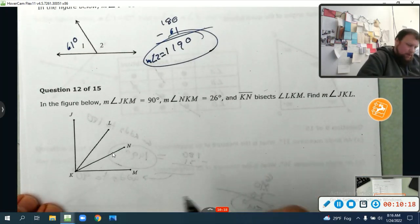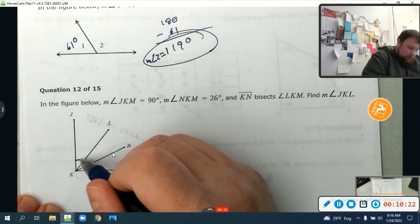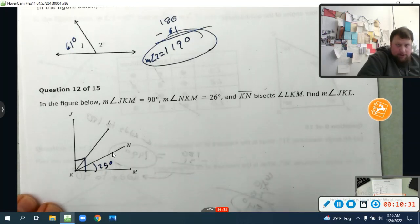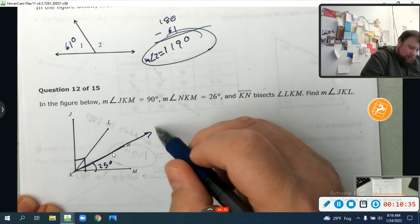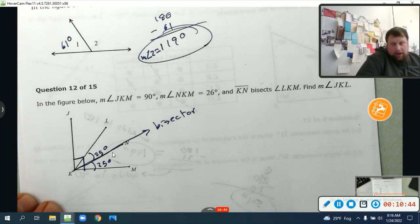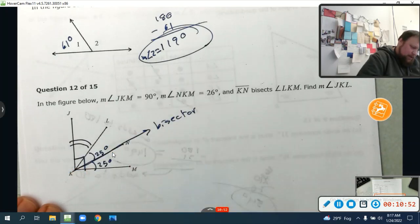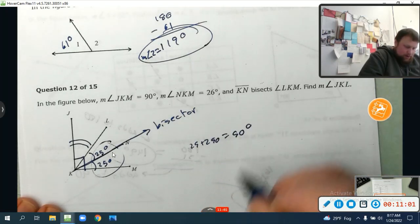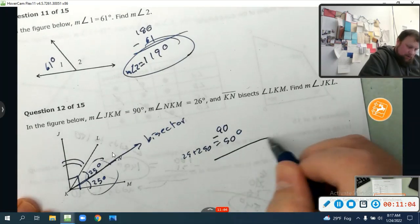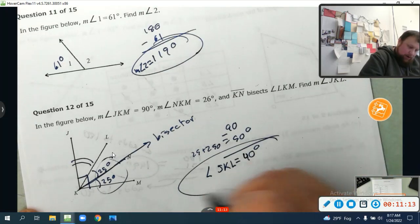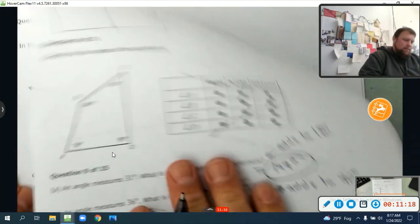These can be confusing unless you label them. So JKM is 90, so this is a 90 degree angle. The measure of angle NKM is 25, so this is 25 degrees. KM is the angle bisector, which tells me this is also 25 degrees because it bisects LKM. So this is 25. We want to find JKL, this one right here. Those add up to 50 degrees and the whole thing is 90, so 90 minus 50 is going to be 40 degrees. So angle JKL equals 40 degrees. Once you label it, most of it is pretty simple.